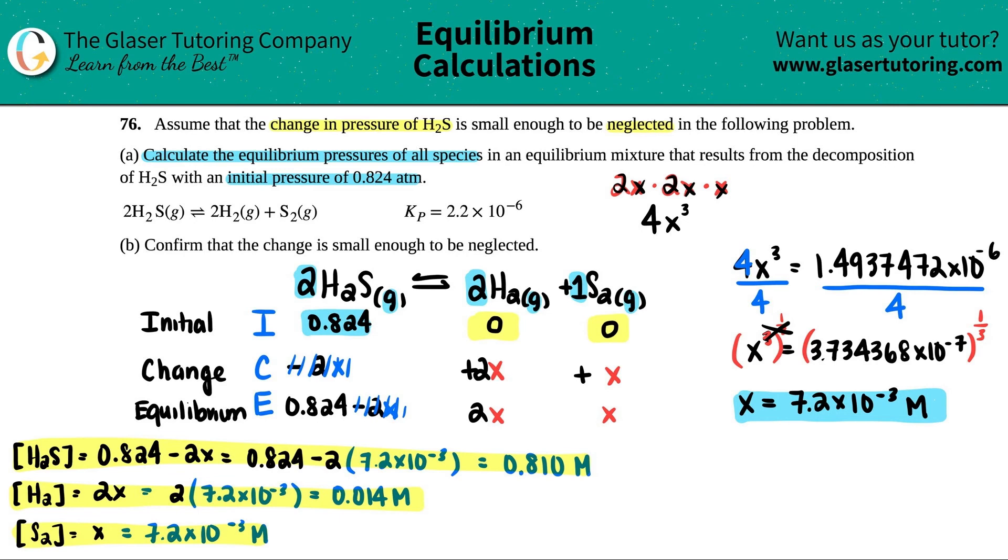Now for letter B, it says confirm that the change is small enough to be neglected. Now, this kind of question is teacher or professor specific. So I would ask your teacher or professor first to determine what way they want you to do this little check here. Some professors might just say, look at the Kp value. If the Kp value is times 10 to the negative fifth or smaller, in this case, we have times 10 to the negative sixth, you could automatically neglect your changes.